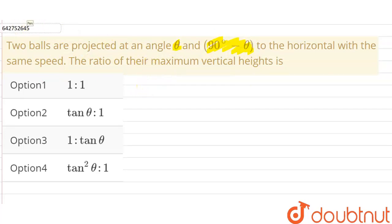Now in a projectile motion, as we know that the maximum vertical height a projectile can reach is given as h equals u square sine square theta divided by 2g.